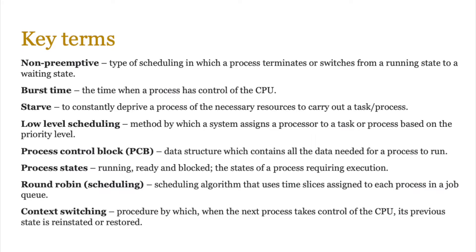Non-pre-emptive is another type of scheduling in which a process terminates or switches from a running state to a waiting state. Burst time is the time when a process has control of the CPU and instructions are being executed. Starve means to constantly deprive a process of the necessary resources to carry out its task. Low-level scheduling is a method by which a system assigns a processor to a task based on priority level — dealing with a system crash is higher priority than typing in a word processor.